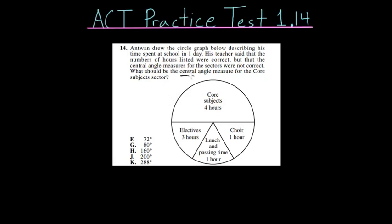So this sector here is the core subjects, and when they're referencing central angle measure, that's talking about the angle that your slice of pie essentially makes with the center. So for our choir of one hour, our central angle measure would be this angle here. For our core subjects, it would be this angle here, though we know the angle is wrong and we have to figure out what the correct one is.